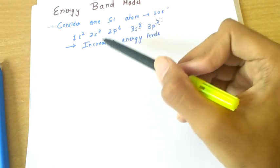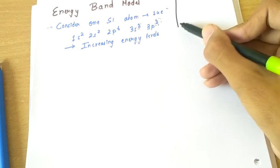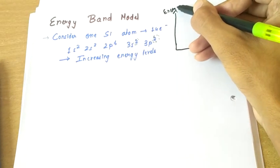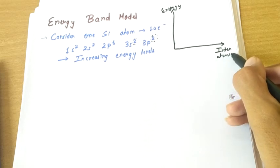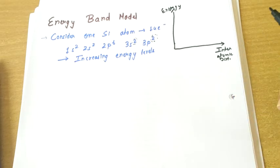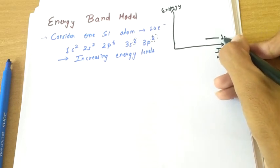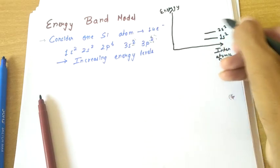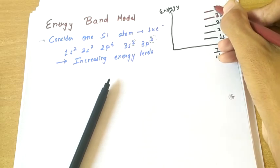As we move from left to right, we have increasing energy levels. Let us draw a graph with energy on the y-axis and interatomic distance on the x-axis. The different energy states are: 1s2, 2s2, 2p6, 3s2, and 3p2.